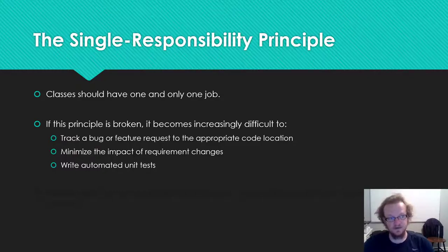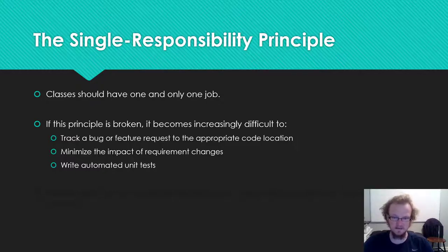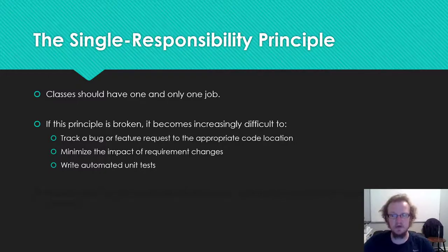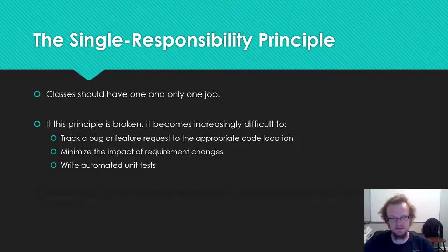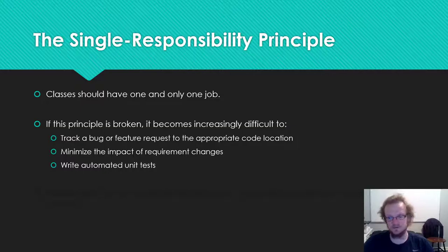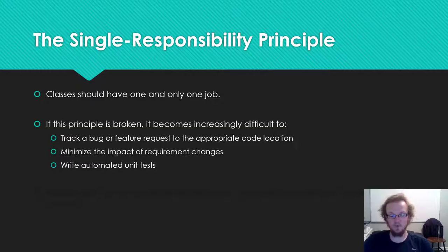The smaller your classes are, the more likely they are to have only one job, and the smaller and more focused they are, the easier it is to exercise all the code in that unit with an automated test. If a class is trying to do a whole bunch of things, as the number of jobs increases, the likelihood that you'll miss a code path increases. If you remember from the testing module, there is line-by-line testing, branch-level testing, and code path-level testing — the more jobs your class has, the more complicated it becomes and the more likely you are to miss a code path and leave something untested.